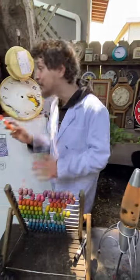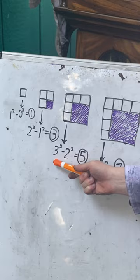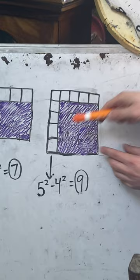Every odd number can be made from some square number minus the previous square number. Here are some visual examples of that, like 5 squared minus 4 squared, leaving 9.